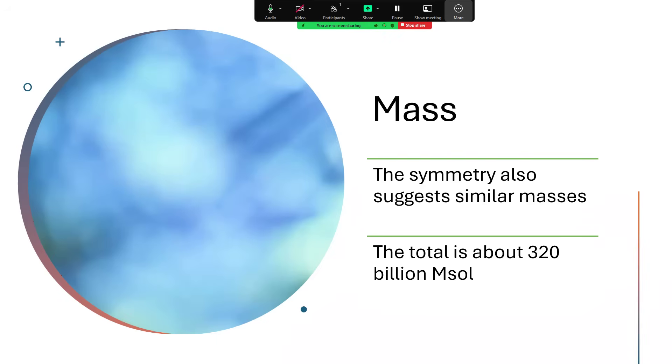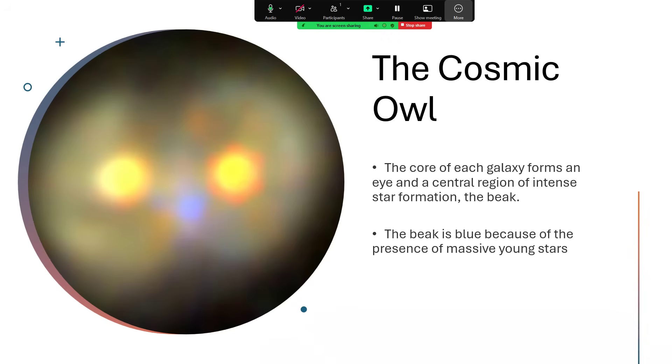We can work out that there's about 320 billion solar masses divided roughly equally between the two galaxies, so about 160 billion solar masses each. Fairly heavyweight even though they're not particularly large at the moment, but they will form one larger galaxy once things calm down.